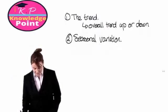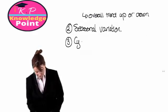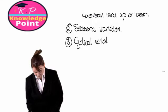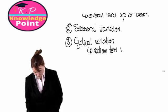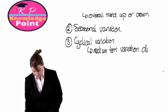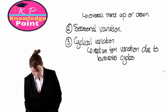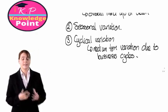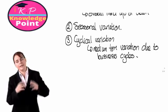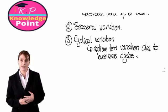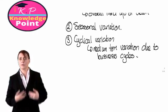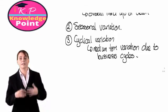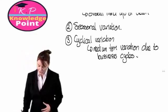The third component of time series is the cyclical variation. These are the medium term or more long term variations due to business cycles. So for example, economic cycles, like sometimes the economy is in recession, sometimes the economy is doing well. That would be a medium or more long term variation in our sales. We would expect during a recession for our overall sales to be lower than when there is economic growth.